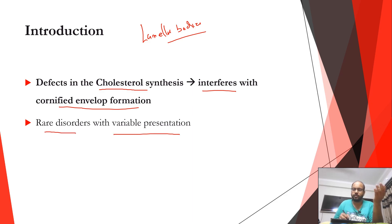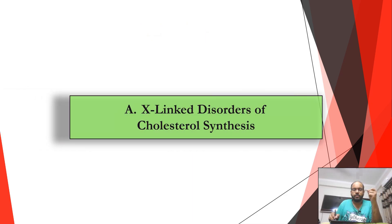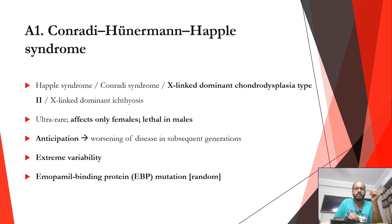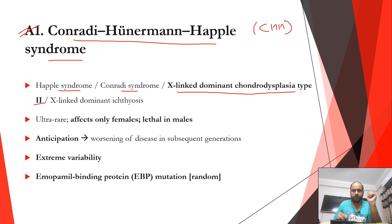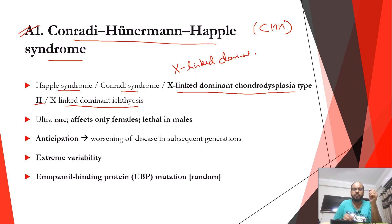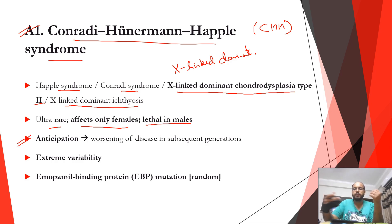We'll start with Conradi-Hünermann-Happle syndrome, abbreviated CHH. It is also known as Happle syndrome and x-linked dominant chondrodysplasia type 2. It presents with x-linked dominant ichthyosis. It is ultra-rare, affects only females, and is lethal in male fetuses. CHH shows anticipation, meaning the disease worsens in subsequent generations.